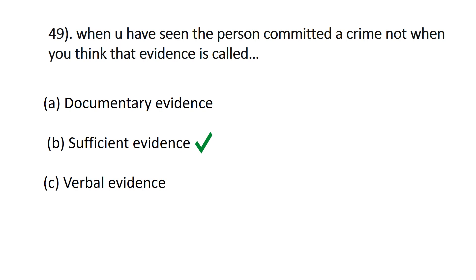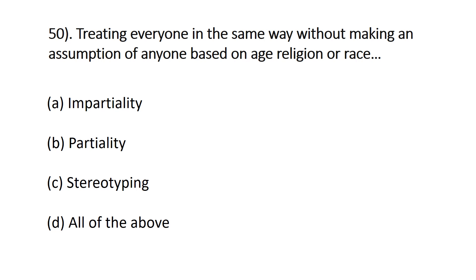Question number fifty: treating everyone in the same way without making assumptions based on age, religion, or race is — A) impartiality, B) partiality, C) stereotyping, D) all of the above. The correct answer is A, impartiality.